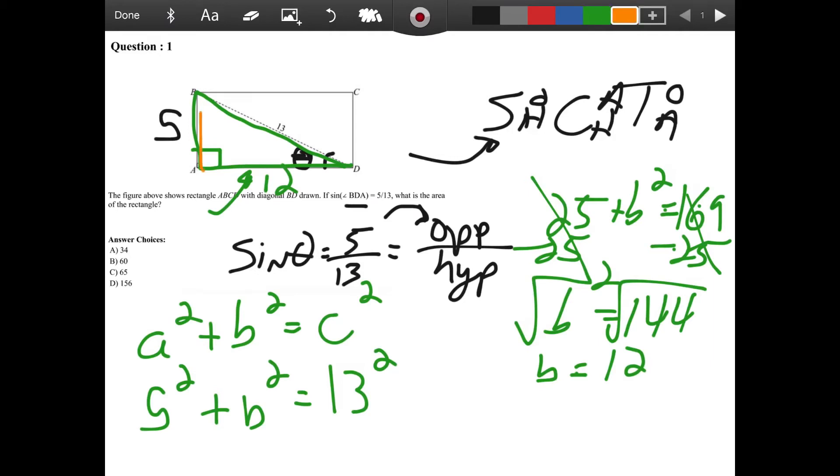Now we want the area of this whole rectangle. The area of a rectangle is base times height. Or in this case, we have a base of 12 and a height of 5, making the area of this rectangle 60 units squared. So it's going to be choice B.